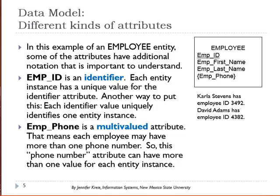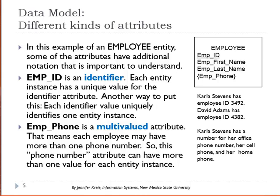The notation around phone indicates that it is a multi-valued attribute. What this means is that for that particular attribute, you might want to put more than one value in there. For example, Carla Stevens has a phone number for her office, a phone number for her cell, and a phone number for her home.